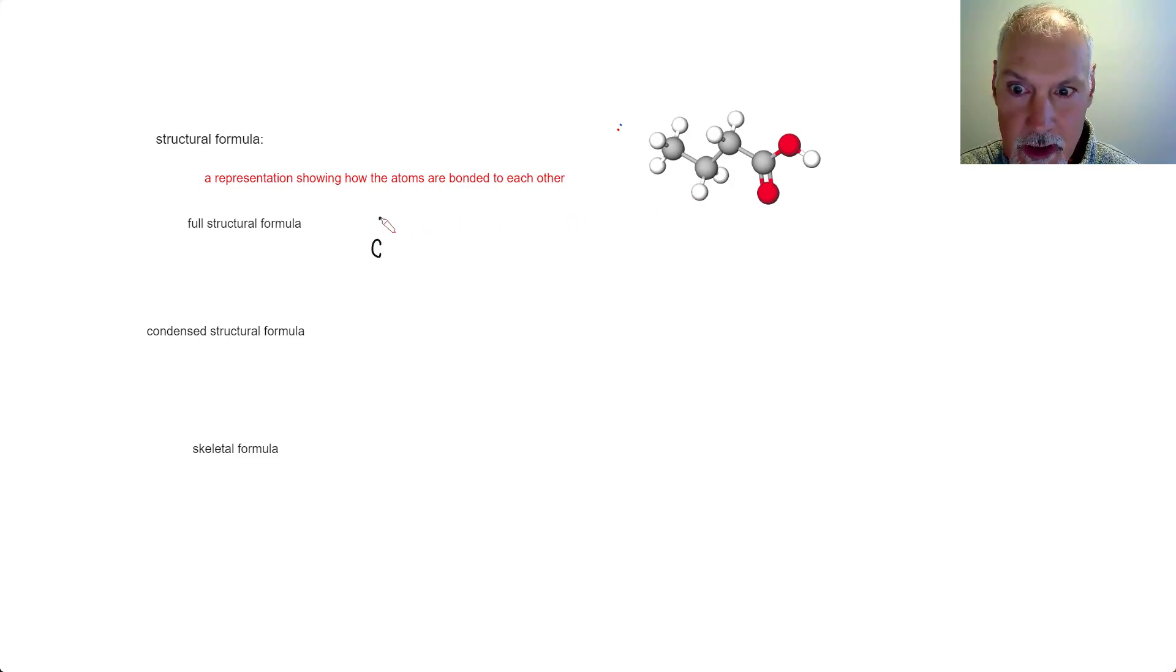Again, the black is the carbon connected to three hydrogens. So that might be carbon number one. Now let's move on to carbon number two. It's connected to two hydrogens.